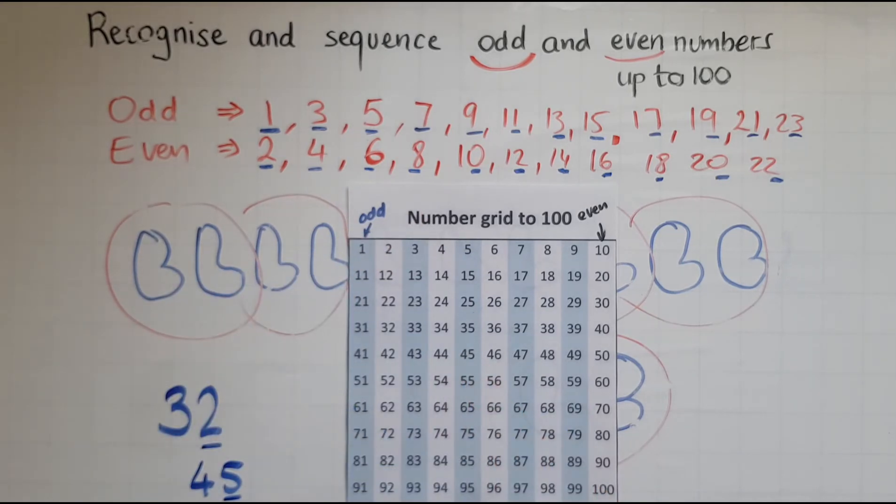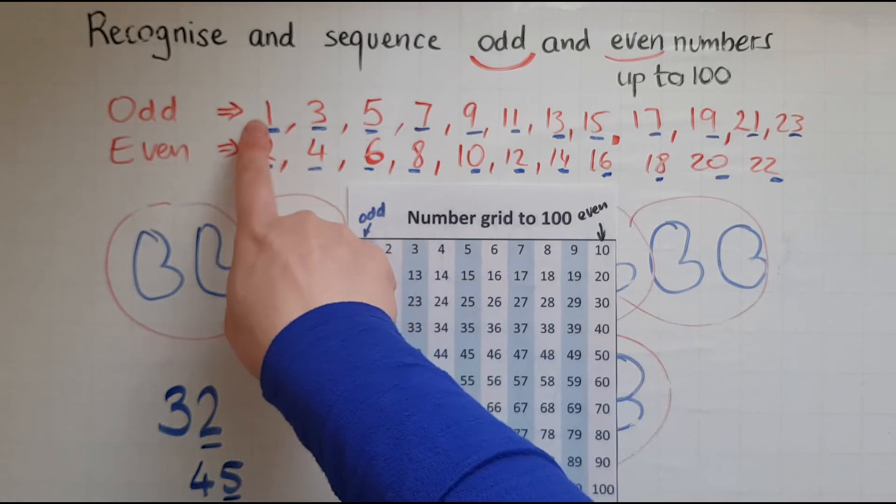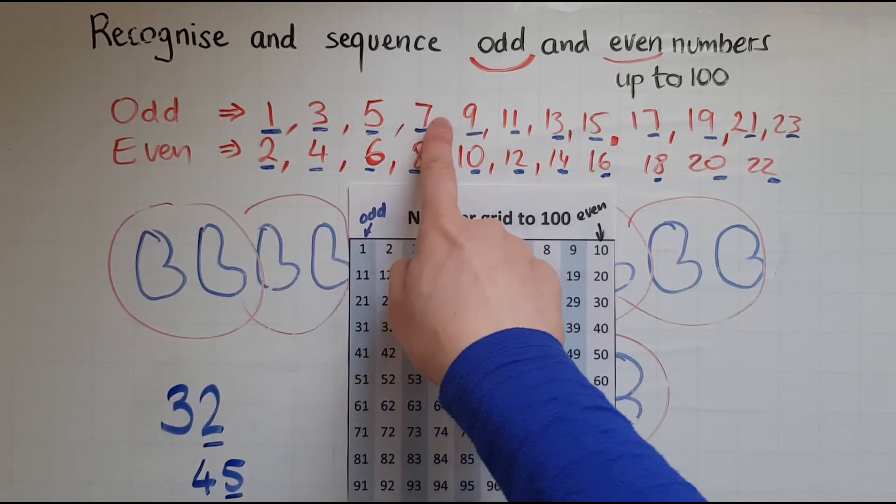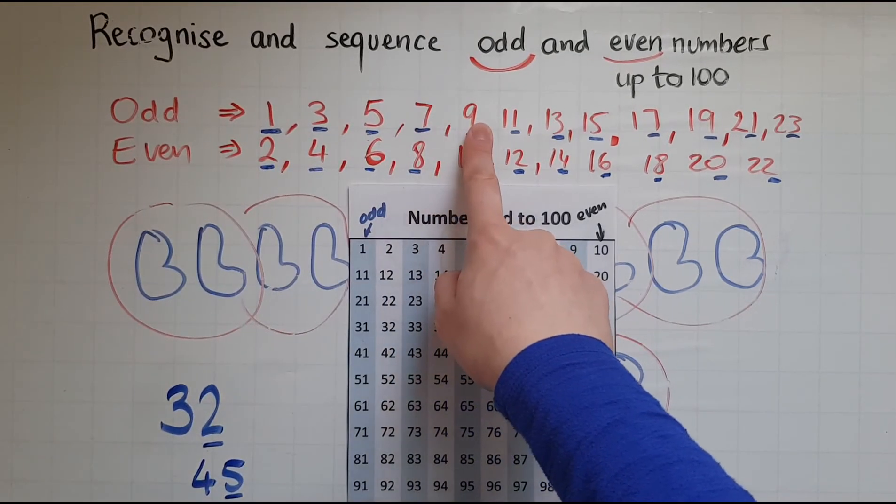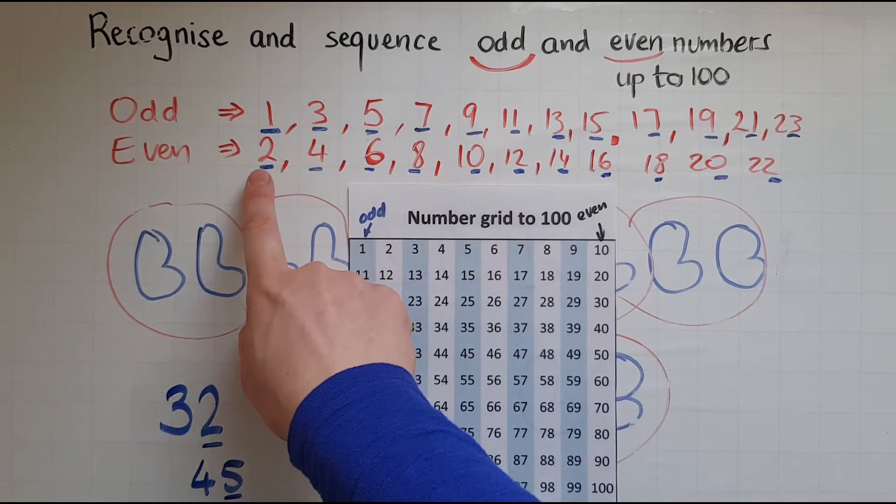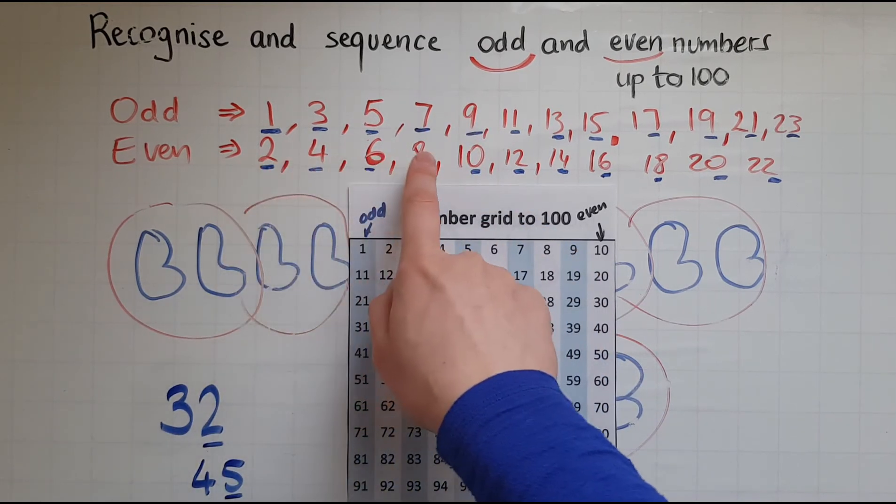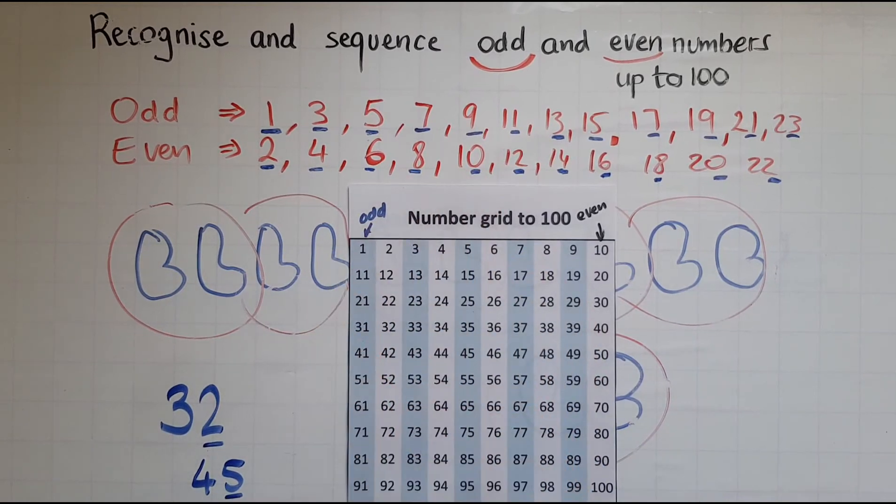So all that you have to do is really look at the last digit. Look at the unit. If the unit is 1, 3, 5, 7, 9 then the number is odd. If the unit is 2, 4, 6, 8 or 0 then the number is even.